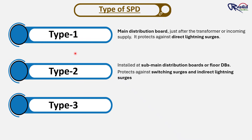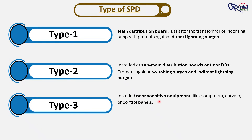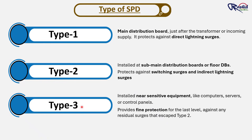Type 2 SPD generally uses MOV technology. Type 3 SPD is installed near very sensitive equipment like computers, servers, or control panels. Even after Type 1 and Type 2 SPDs, a very small amount of surge might still remain. So Type 3 catches the tiny leftover surges and makes sure they cannot damage sensitive loads like server rooms, data centers, medical equipment, or CCTVs.